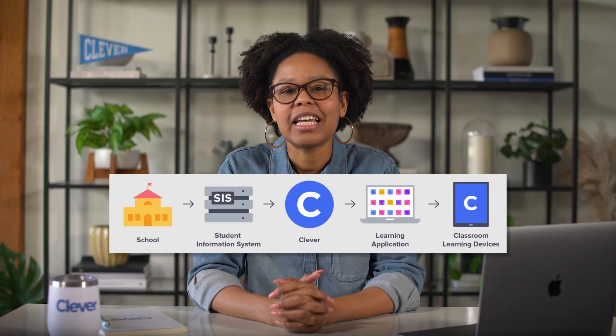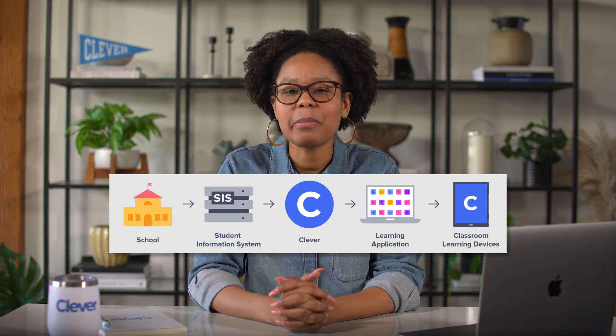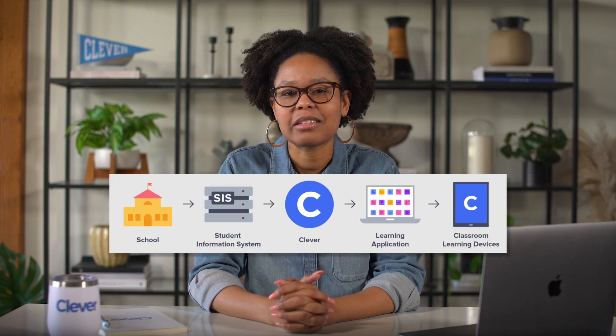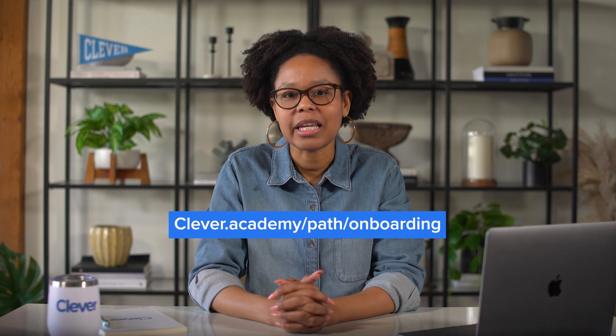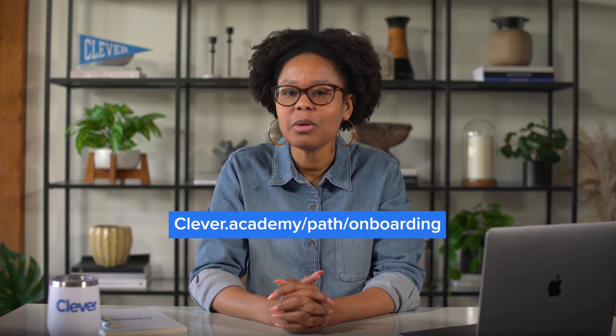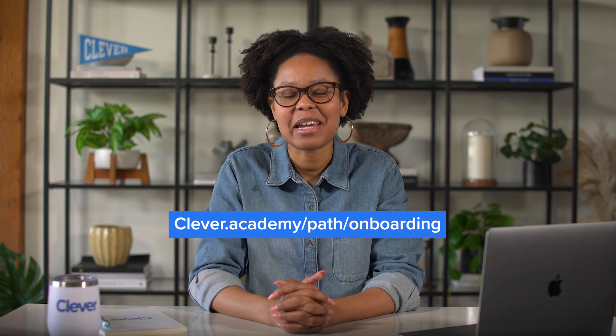To get your school's data into Clever, you need to set up your sync. There are a few ways to sync data. This video is for those setting up an SFTP or manual sync. Not sure which sync type you need? Please check out our onboarding guide at clever.academy/path/onboarding for step-by-step help in choosing your sync type.